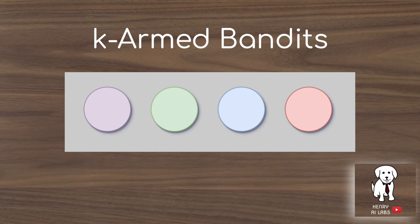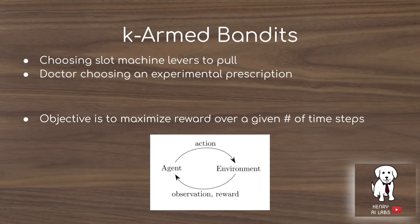In the K-Armed Bandits problem, imagine a situation where you have four different buttons to press and receive a reward for pushing each of them. You want to smartly explore and exploit which buttons to push so as to maximize the rewards over a hundred pushes. The K-Armed Bandits is similar to slot machines with different levers to pull, or a doctor choosing experimental prescriptions for sick patients. The objective is to maximize reward over a given number of time steps.